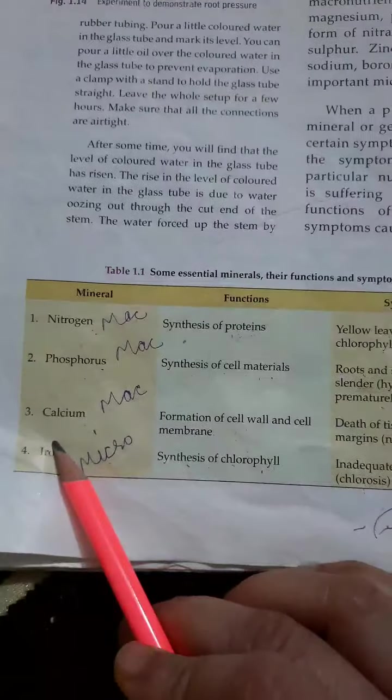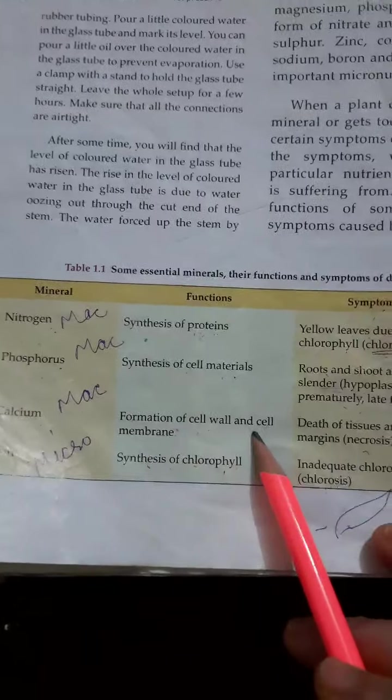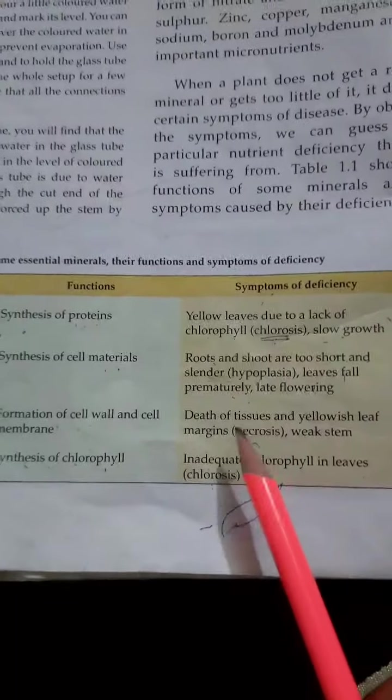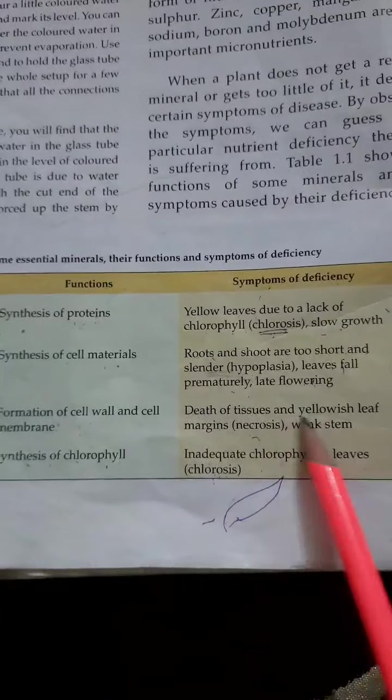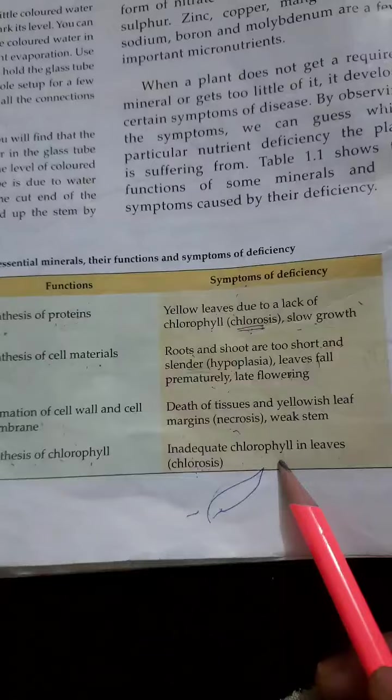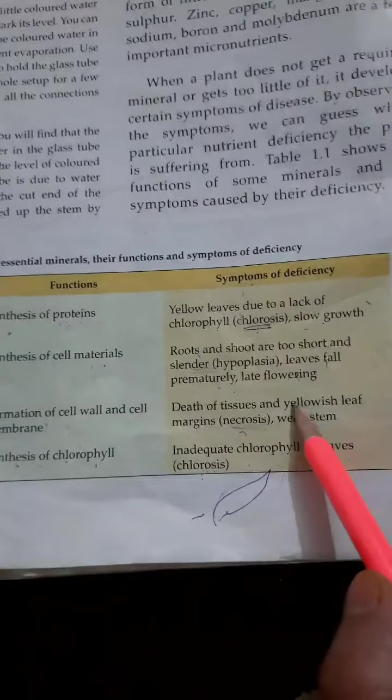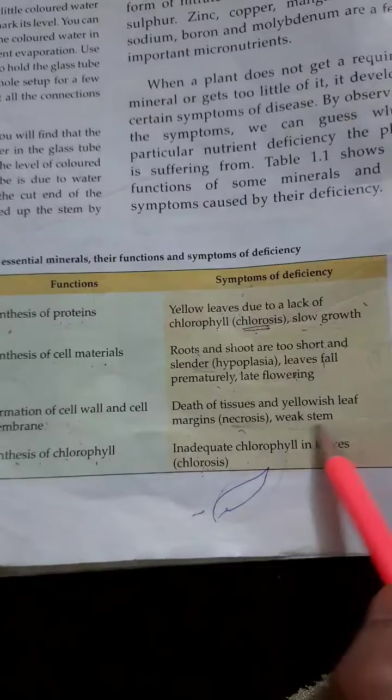Next is calcium, again a macronutrient. It helps in the formation of cell wall and cell membrane. If it is deficient in plant it causes death of tissues and yellowish leaf margins. This condition is known as necrosis and the deficiency causes weak stem of the plant.